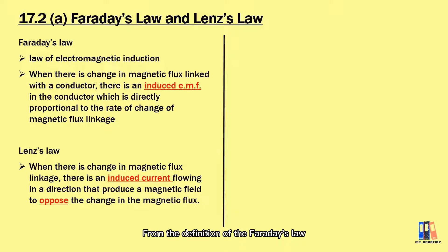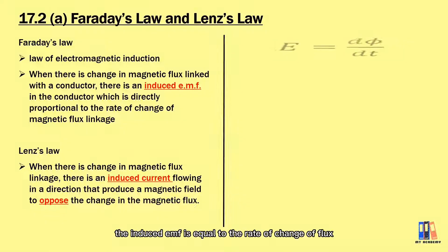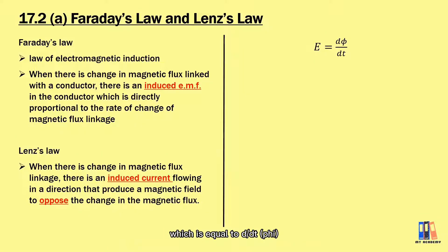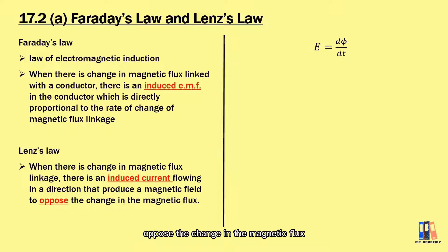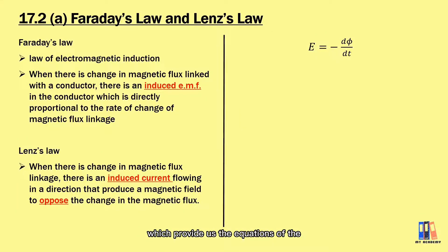From the definition of Faraday's law, the induced EMF is equal to the rate of change of flux, which is equal to dΦ/dt. Lenz's law states that the induced current always opposes the change in the magnetic flux. Combining both laws gives us the equation E = −dΦ/dt.